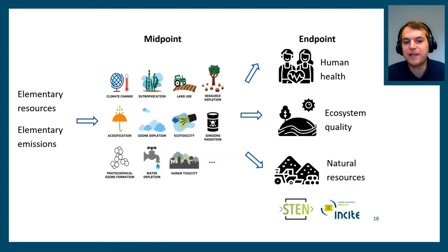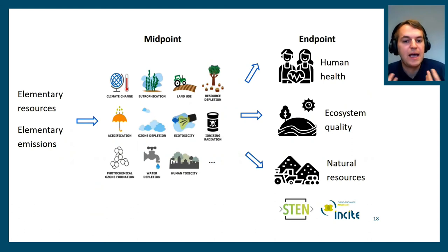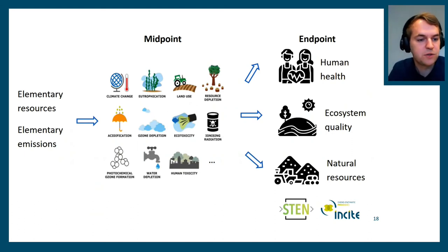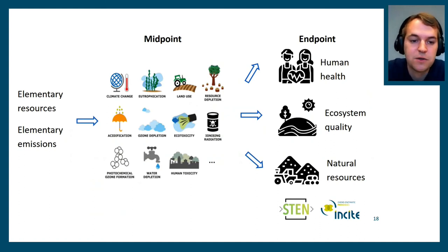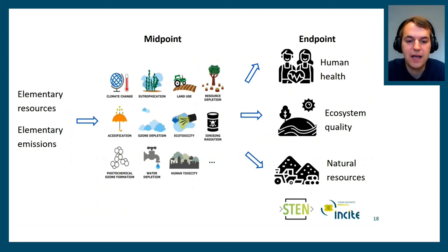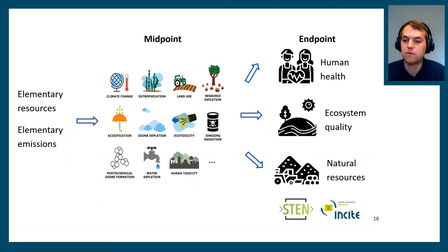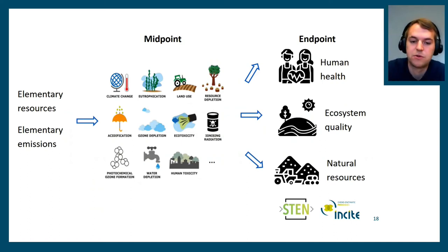There is not only climate change — there are also many other impacts on the environment. The different elementary resources and elementary emissions from our inventory have effects on many different indicators besides climate change, such as eutrophication, land use, and ecotoxicity. These all can affect human health, ecosystem quality, or the depletion of natural resources.